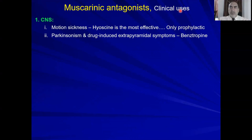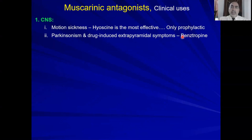Clinical uses on the CNS level: motion sickness — scopolamine (hyoscine) is the most effective and is only prophylactic; you take it before the trip. For Parkinsonism and drug-induced extrapyramidal symptoms, we use benzotropine. Why not atropine? Because atropine needs high doses for central effect, and high doses bring more side effects. Additionally, benzotropine is more lipophilic — it's atropine with a benzyl or phenyl group added, making it more lipophilic so it crosses the blood-brain barrier more easily with fewer side effects.